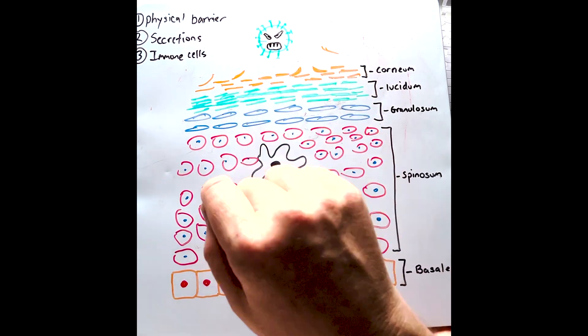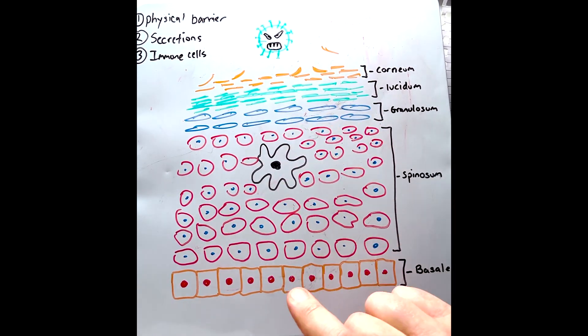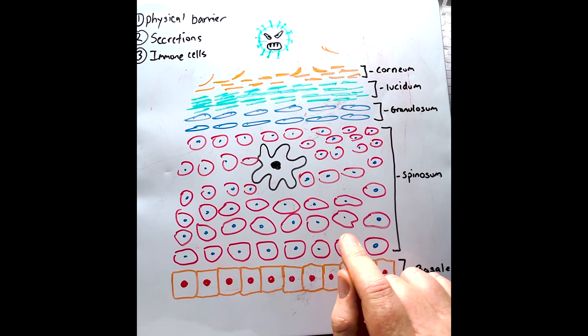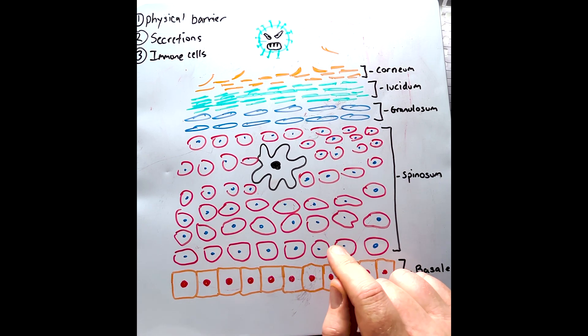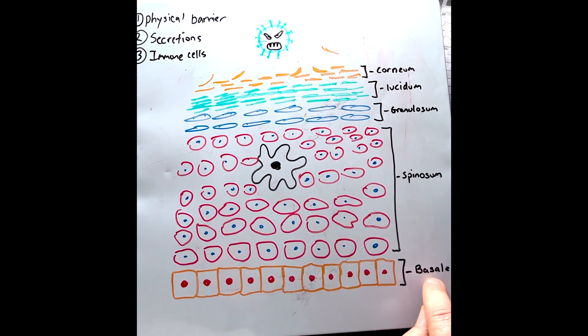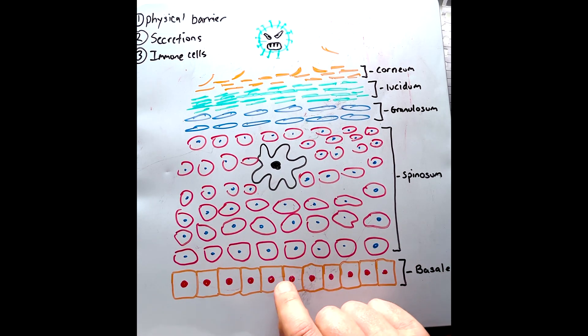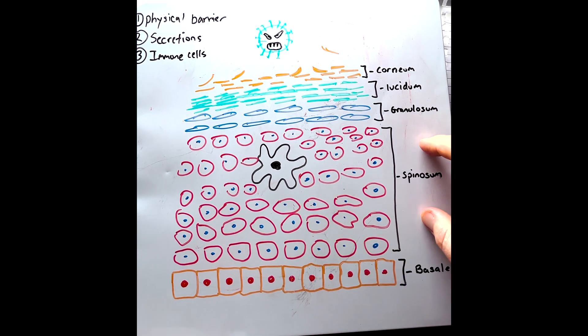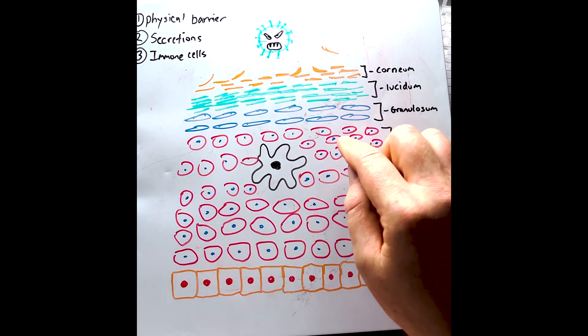Starting with the physical barrier. The epidermis is made up of multiple layers of keratinocytes. These are cells that produce a protein known as keratin. These keratinocytes are born in the basale layer, and once they mature or can't reproduce anymore, they start to migrate into the spinosum layer, which is eight to ten layers thick.